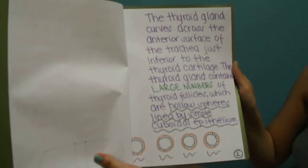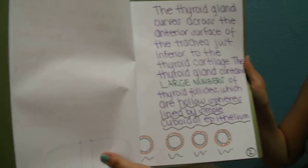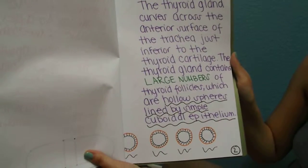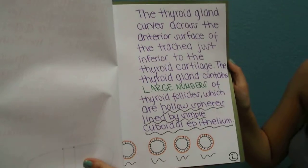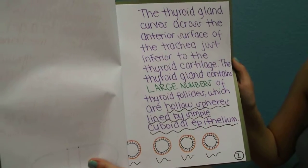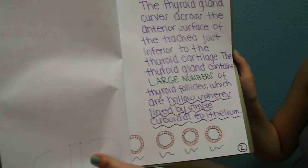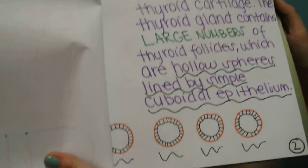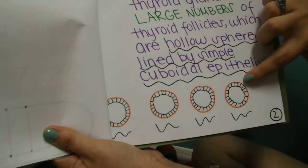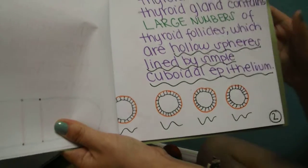The thyroid gland curves across the anterior surface of the trachea, just inferior to the thyroid cartilage. The thyroid gland contains large numbers of thyroid follicles, which are hollow spheres lined by simple cuboidal epithelium. Down here we have the hollow spheres lined with simple cuboidal epithelium.